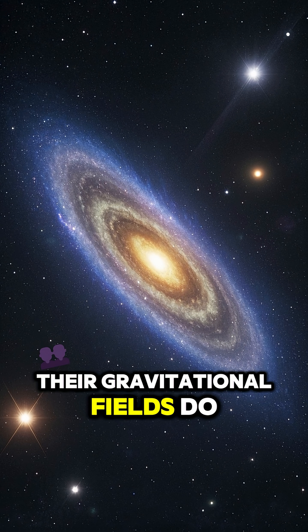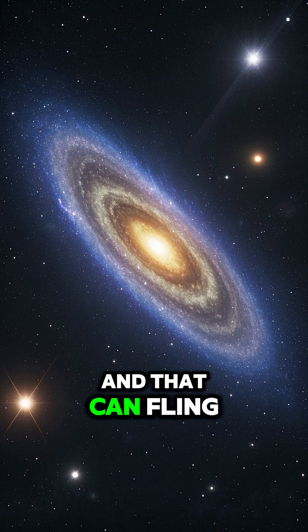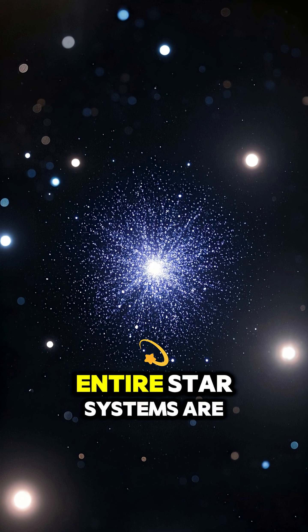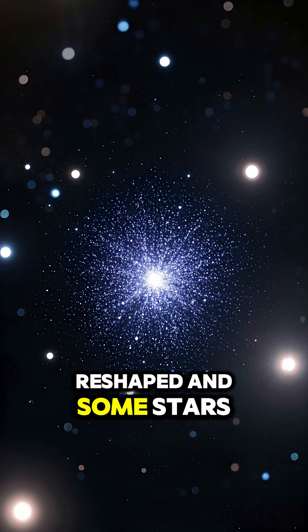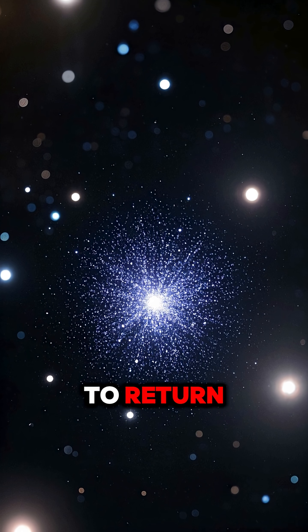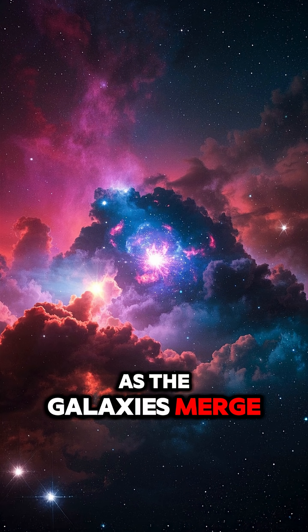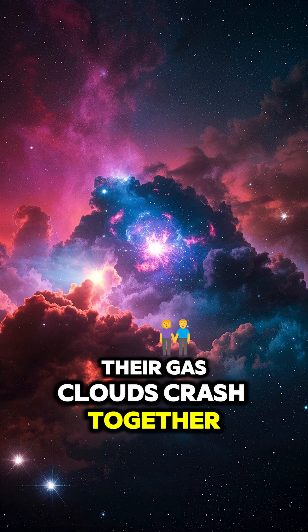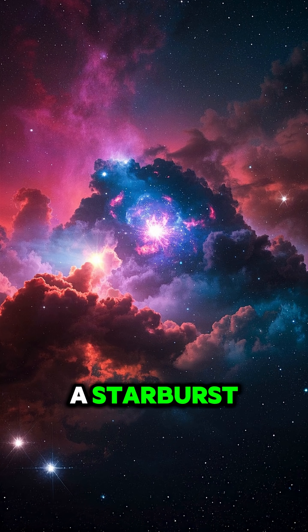Their gravitational fields do interact though, and that can fling stars into new orbits. Entire star systems are reshaped and some stars get ejected into deep space, never to return. As the galaxies merge, their gas clouds crash together, triggering massive star formation called a starburst.